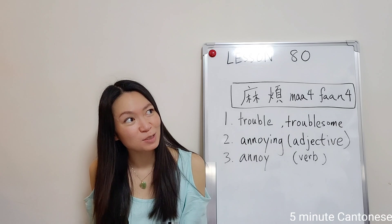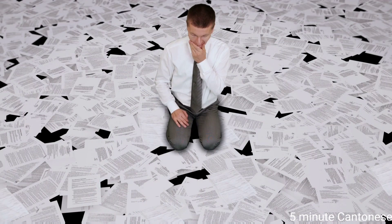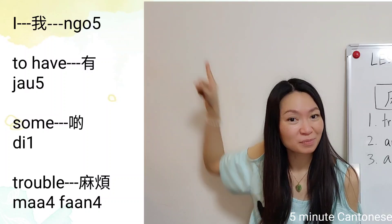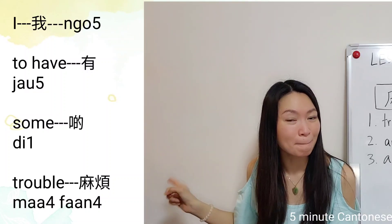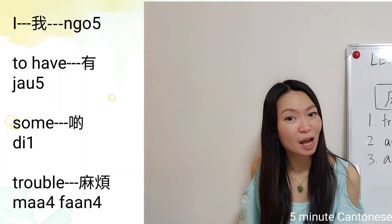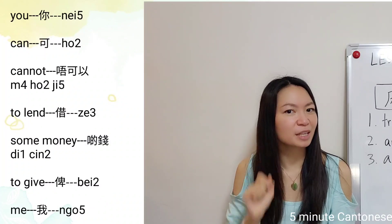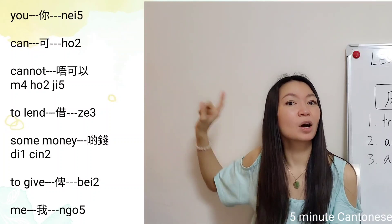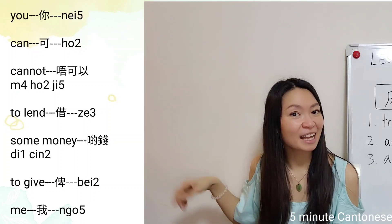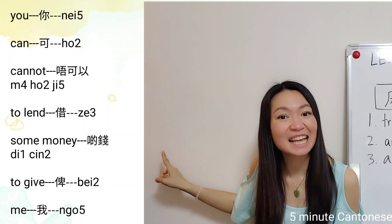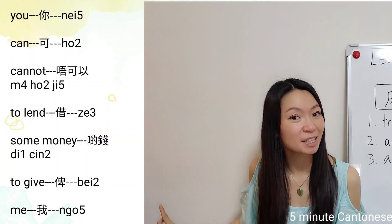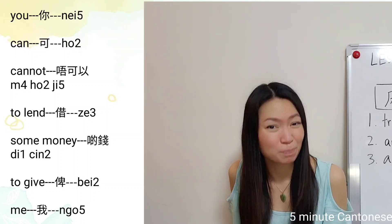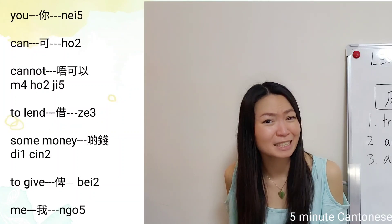For 'trouble' as a noun, let's make a sentence. For example: 'I have some trouble. Can you lend me some money?' In Cantonese: 我有丁麻煩，你可唔可以借地錢給我呀？ — 我有丁麻煩，你可唔可以借地錢給我呀？